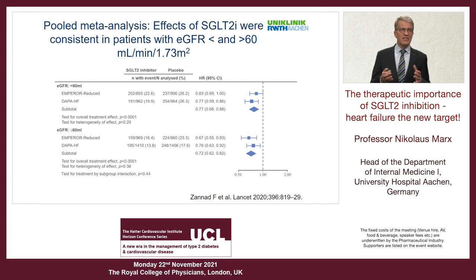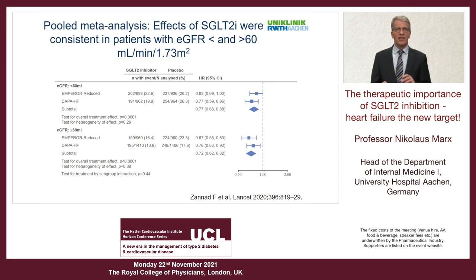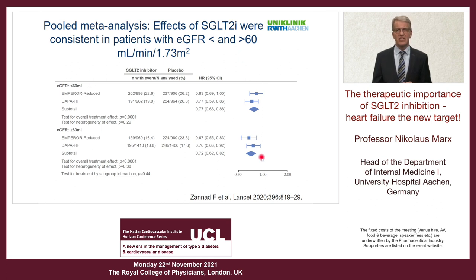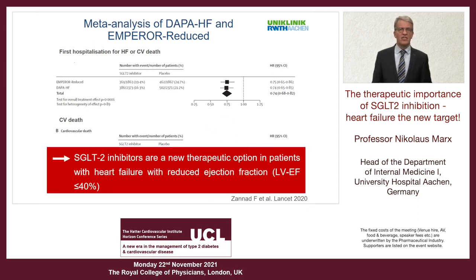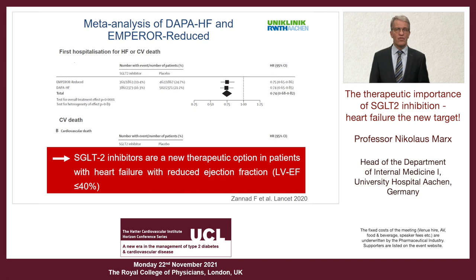A pooled meta-analysis combining data from DAPA-HF and EMPEROR-Reduced examined whether chronic kidney disease impacts outcomes. Patients were dichotomized by eGFR below 60 and 60 or above. All results fell on the left side of the line of unity, confirming consistent effects in patients with and without CKD. To summarize, both trials showed very robust reduction of the combined endpoint of first hospitalization for heart failure or CV death, establishing SGLT2 inhibitors as a new therapeutic option in HFrEF.